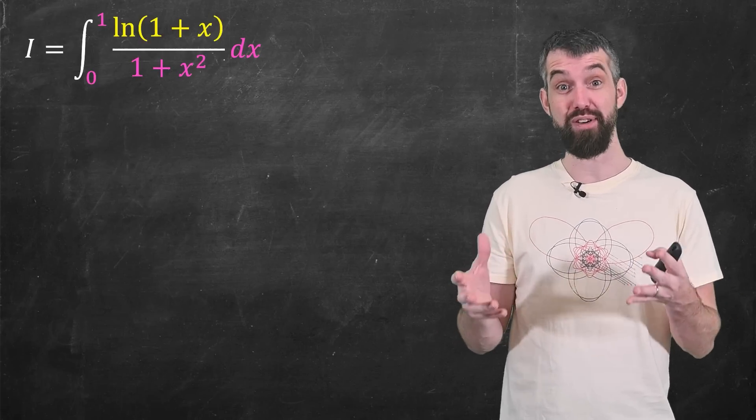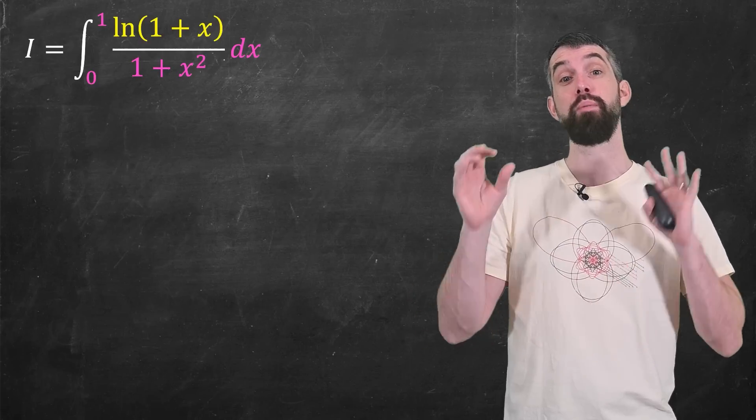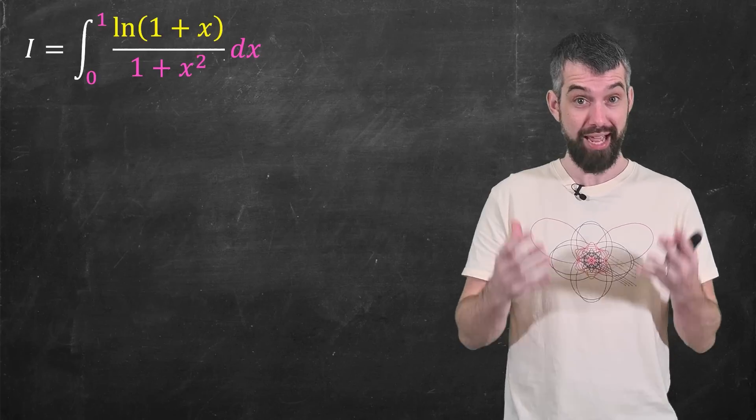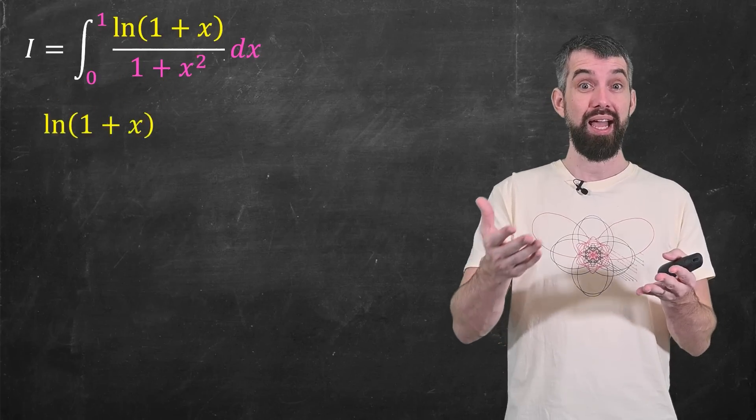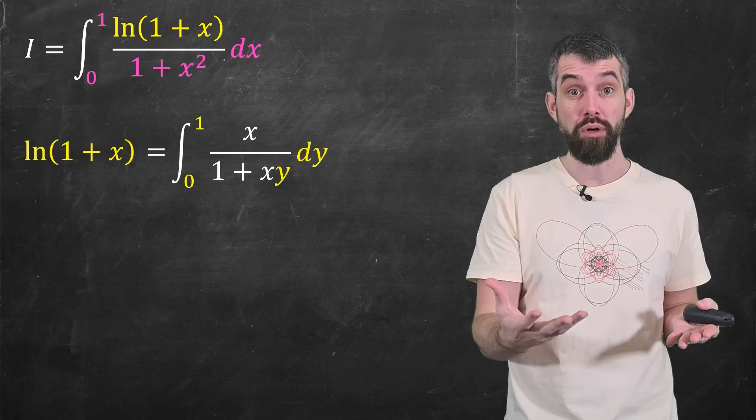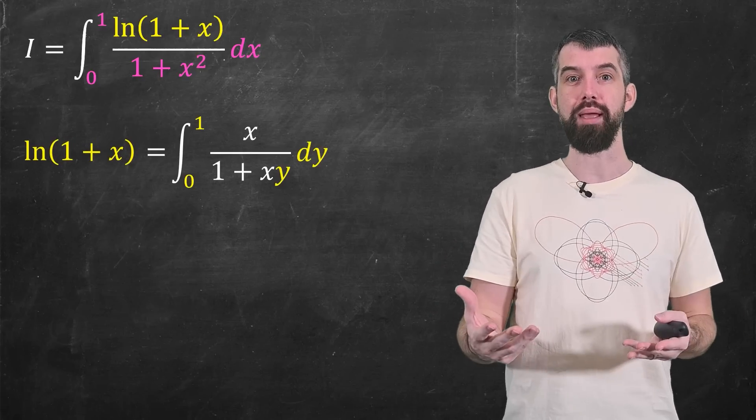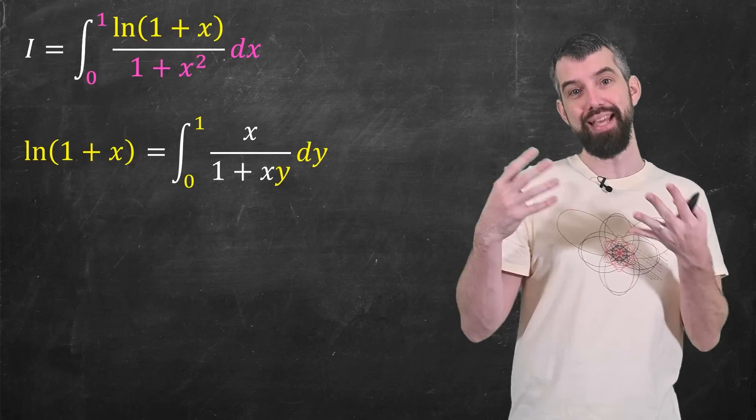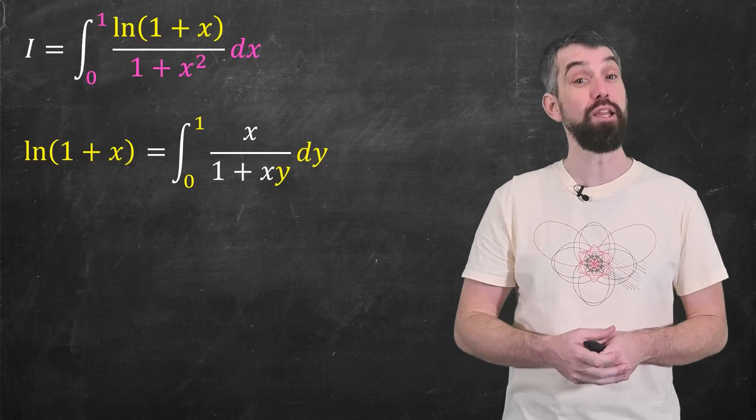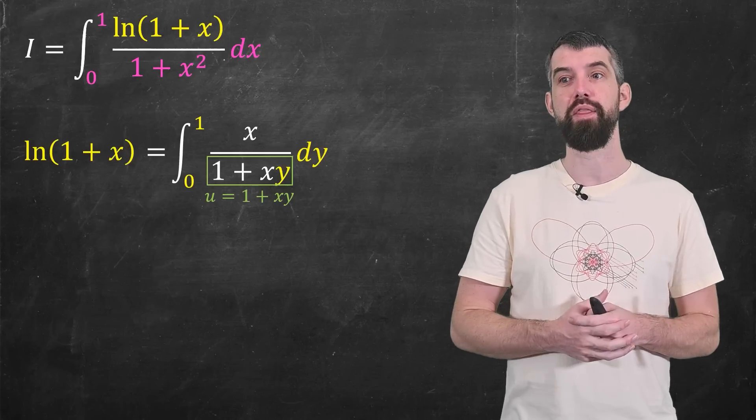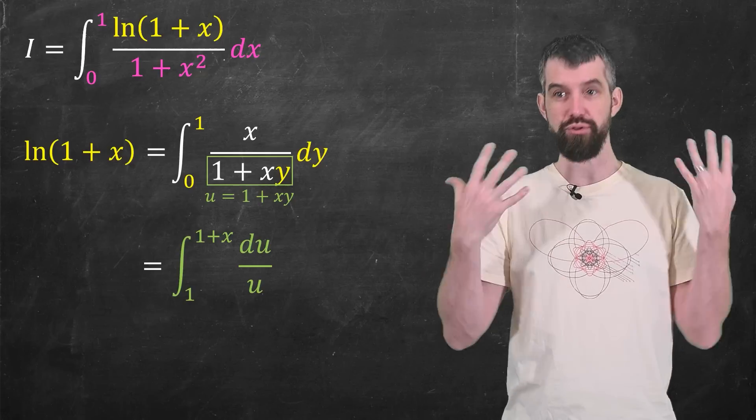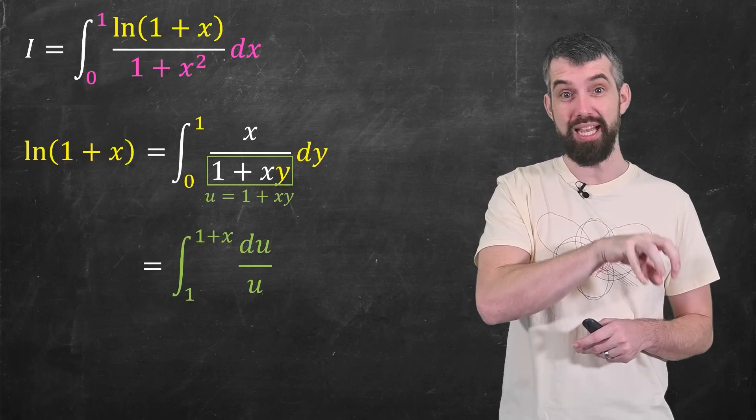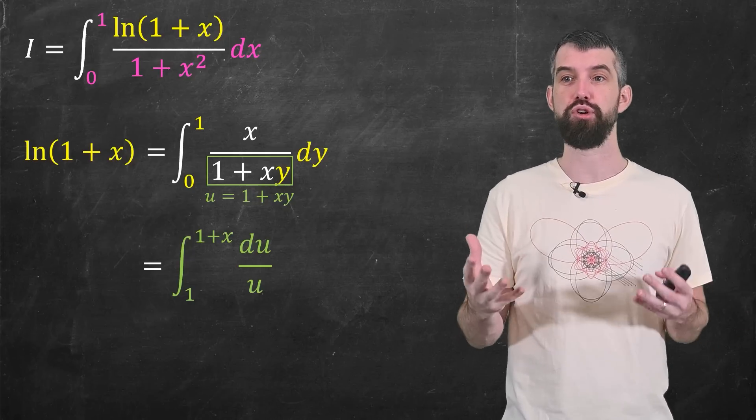Those of you who have seen my multivariable calculus playlist will know that there's a ton of tricks that we can do when we have a double integral that aren't accessible to us for a single integral. So specifically what I'm going to do is I'm going to try to take that logarithm and see, can I write the logarithm as an integral with respect to something else, some other variable like y? This function of x, logarithm of 1 plus x, is now an integral with respect to y. Just to see this, if you don't believe me, you can make a u substitution on the bottom, and then when you integrate it out, you get du over u, that will integrate to the logarithm.